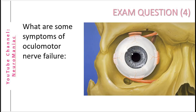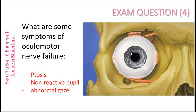Exam time. What are some symptoms of oculomotor nerve failure? Although I haven't discussed this, it's a fairly logical one — try and think back to the functions. Some symptoms can include ptosis, which is a droopy eyelid, a non-reactive pupil, and an abnormal gaze, particularly outwards or downwards.